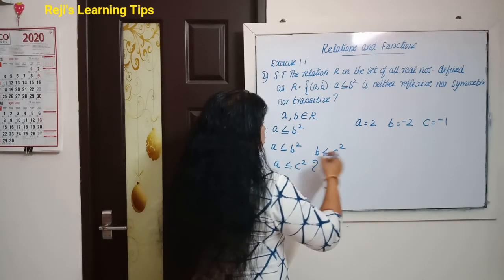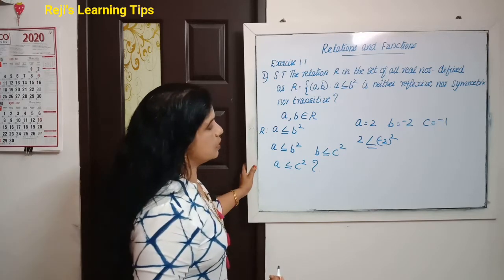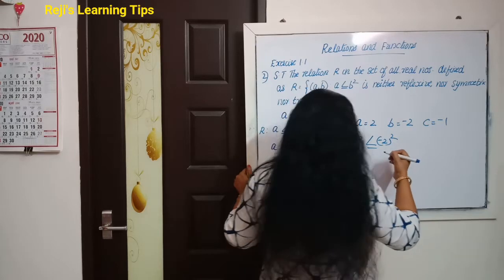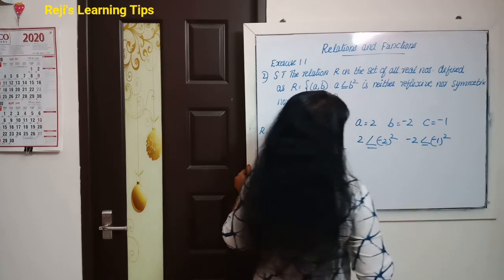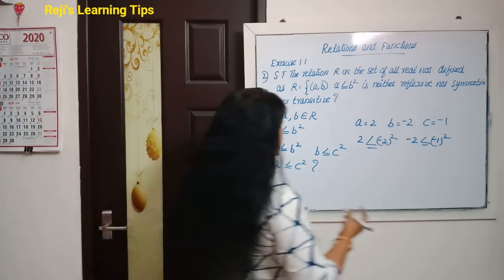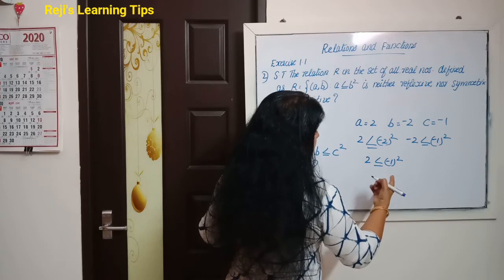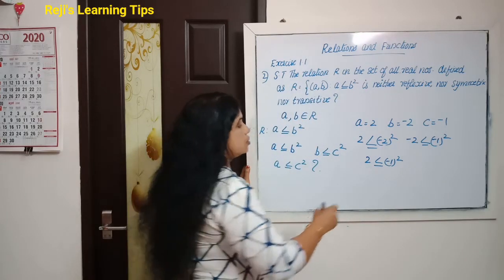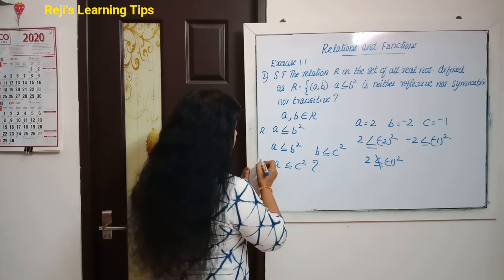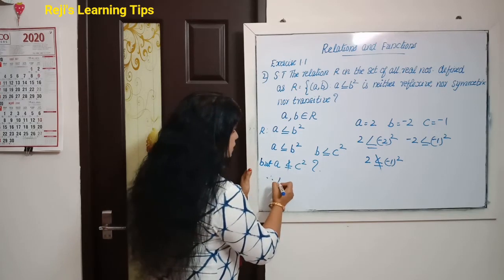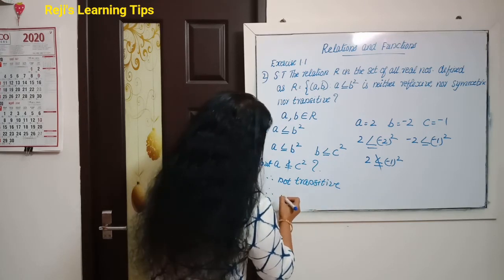Now check transitivity. Let a = 2, b = -2, c = -1. Check a ≤ b²: 2 ≤ (-2)² = 4 — correct. Check b ≤ c²: -2 ≤ (-1)² = 1 — correct. But check a ≤ c²: 2 ≤ (-1)² = 1, and 2 is not less than or equal to 1. So a ≤ b² and b ≤ c² but a is not ≤ c². Therefore it is not transitive.